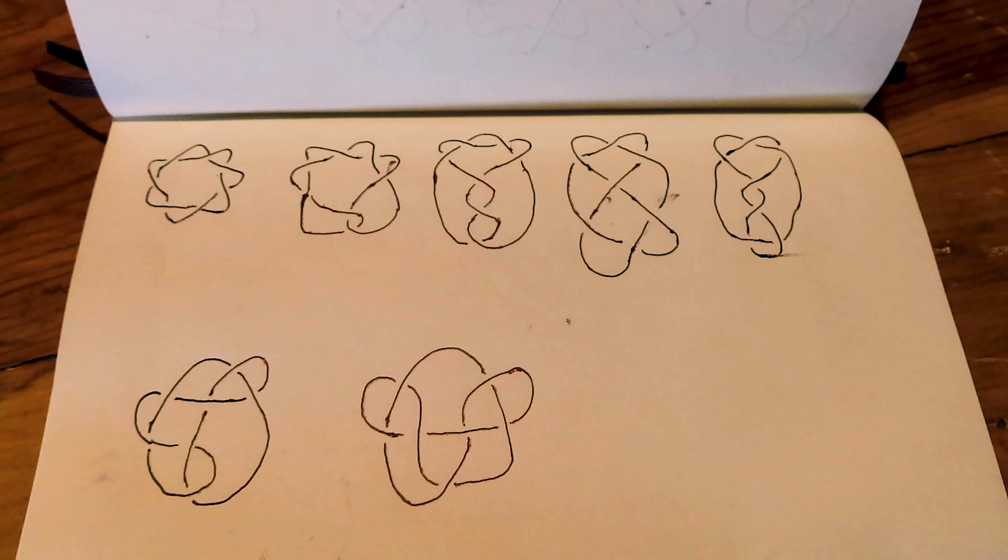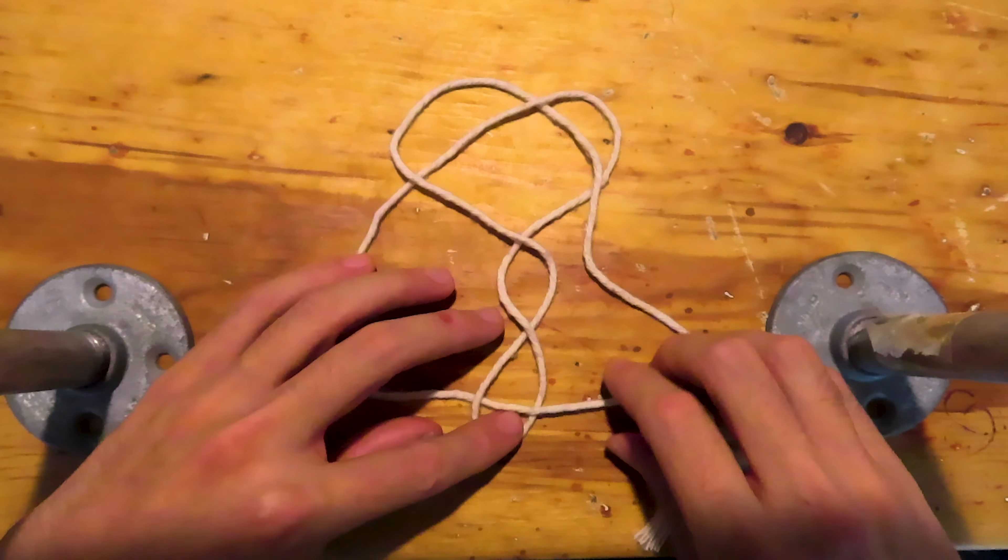Much like the naive relationship between the 7-3 and 6-1 knots, the 7-5 knot looks tantalizingly close to the 6-2 knot, just with an extra twist. Of course, squeaking an extra twist inside a knot is not a trivial matter. So let's tie in.